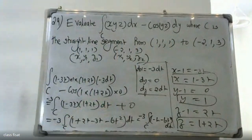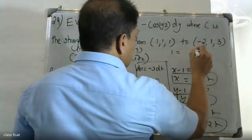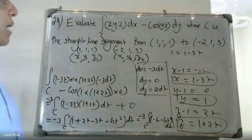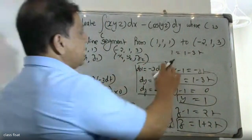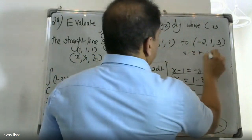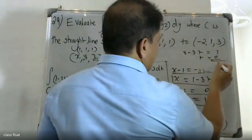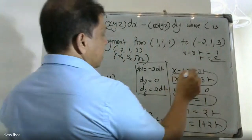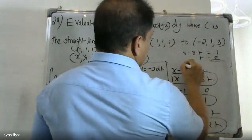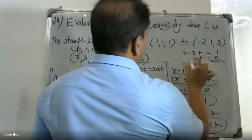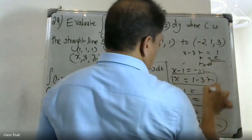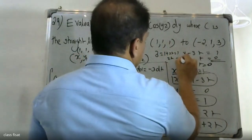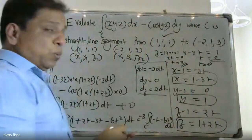X is equal to: 1 minus 3t. One minus three. X is equal to 1 minus 3t. Y is equal to 1 plus 2t. Now, if we consider this point in three cases, we will have t equal to 0. First case: 1 minus 3t equals 1, then we will have 0.